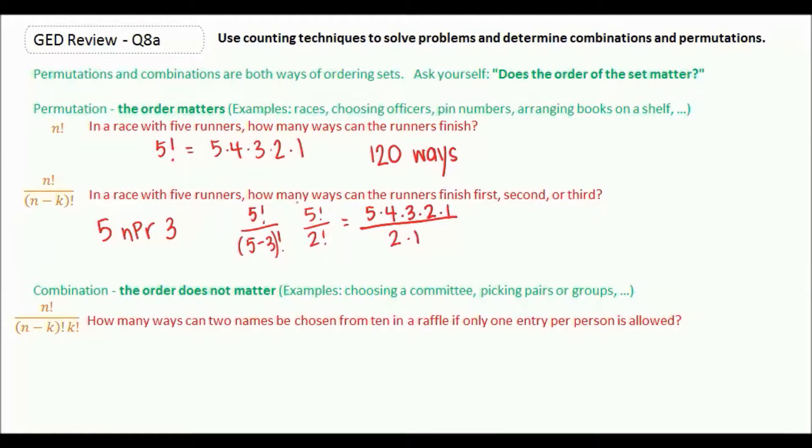And in these cases of permutations, and you'll find the same thing happens in combination, we can often cancel out some common factors in our numerator and our denominator. So over here we have twos and ones that we can cross off, which means we are really just left with five times four times three. Five times four is twenty, and twenty times three is sixty. So the runners can finish first, second, or third in sixty different ways.